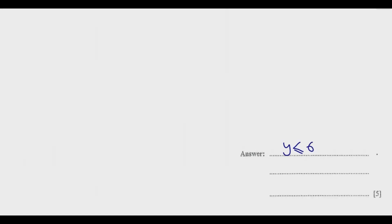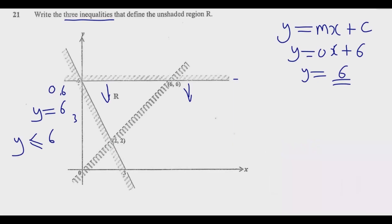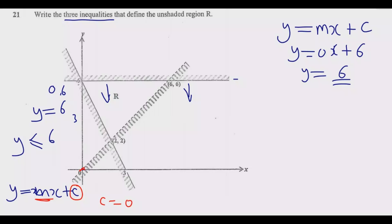So the first inequality is y ≤ 6. Always start with the simplest — the horizontal or vertical line — which typically gets one mark. Now for the second inequality, we look at the dotted line passing through the origin. Because it passes through the origin, the y-intercept C is zero. We just need to find the gradient.